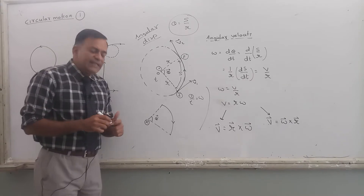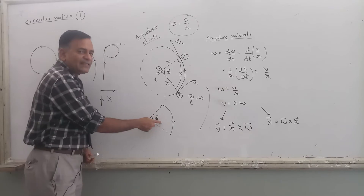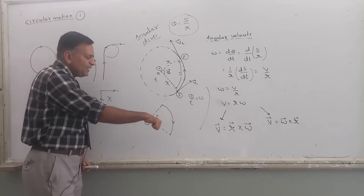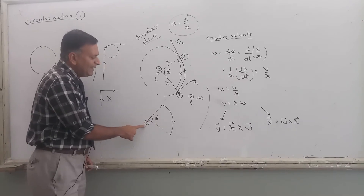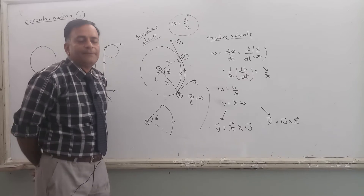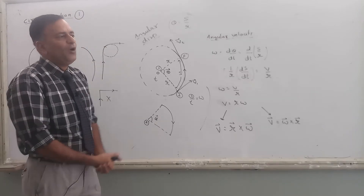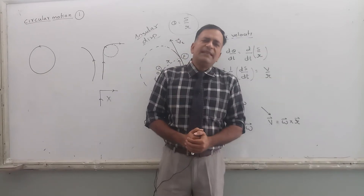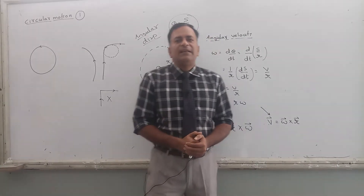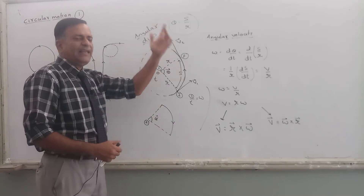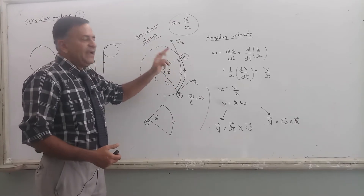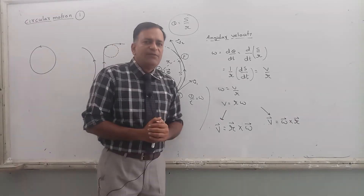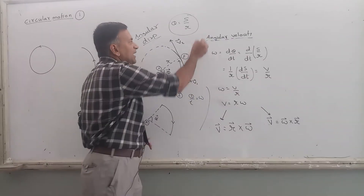If the motion is anti-clockwise, move the fingers anti-clockwise and extend the thumb of the right hand — the thumb points inward, shown by a cross. So: circular motion is when a body moves in a circular path or part of it. Angular displacement is simply the angle swept. Angular velocity is the angle swept per unit time.